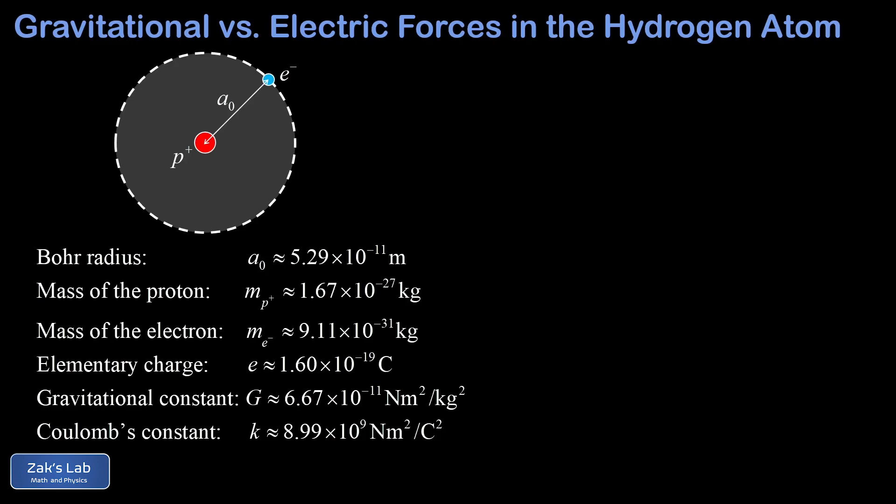So in our picture, we have the basic Bohr model of the hydrogen atom. We have an electron orbiting around a proton at a distance of a_0, which is called the Bohr radius. And that serves as a good approximation of the separation distance between the proton and the electron. We're given all the constants we need in a table.